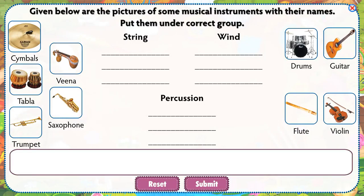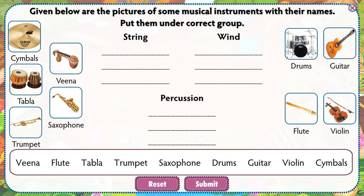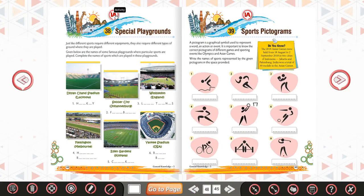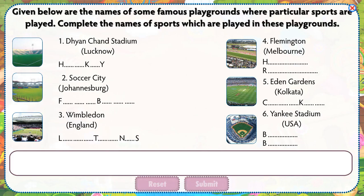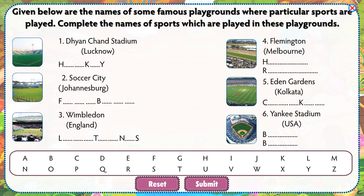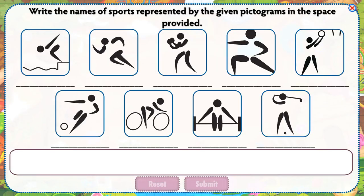Given below are the pictures of some musical instruments with their names. Put them under the correct group. Given below are the names of some famous playgrounds where particular sports are played. Complete the names of sports which are played in these playgrounds. Write the names of sports represented by the given pictograms in the space provided.